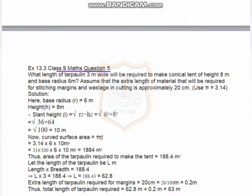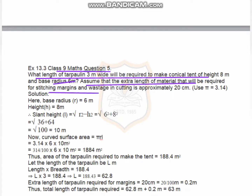Question number five: what is the length of a plane 3 meters wide which will be required to make a conical tent of height 8 meters and base radius 6 meters? Assume the extra length of material required for stitching margin and wastage in cutting is approximately 20 centimeters and take π as 3.14. We know that the base radius is 6 meters and height is 8 meters.